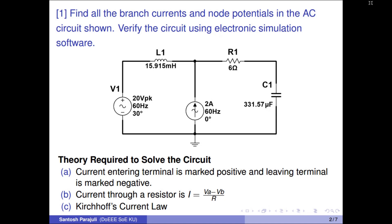Resistor and capacitor are in series. Some basic concepts are needed to solve this AC circuit, and these concepts can be generalized to solve any AC circuits. A: There must be consistency in assuming the polarity of potential drop across an electronic device. B: One should always be aware that current through a resistor is not equal to voltage over resistance, but is always equal to voltage difference over resistance.